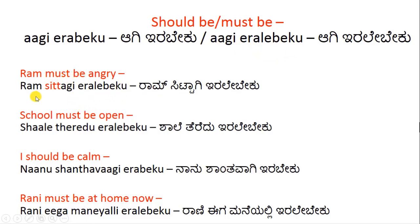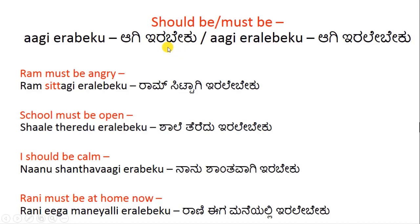Must be. Ram sita-gi-Ira-Beku or Ira-Ley-Beku. You can use either form. 'Must' is a compulsion — must be is a compulsion. 'Should be' is a choice. Generally we use 'Ira-Beku' for must be and 'Ira-Ley-Beku' for should be. But if you use either form for both must be and should be, it is perfectly fine. There is no rule — you can use any for any.